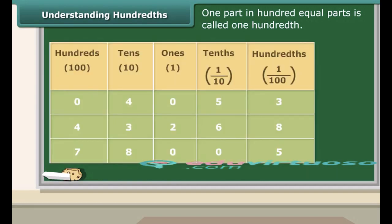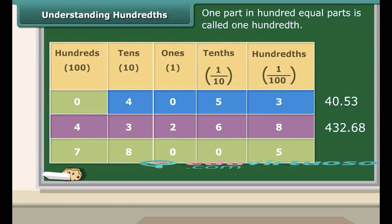Now concentrate on the table and let us read decimals from it. Look at the first row. 40 plus 5 tenths plus 3 hundredths will make 40.53. Now focus on the second row. 4 hundreds plus 3 tens plus 2 ones plus 6 tenths and 8 hundredths will make 432.68. Now pay attention to the third row. 7 hundreds plus 8 tens plus 5 hundredths will make 780.05.